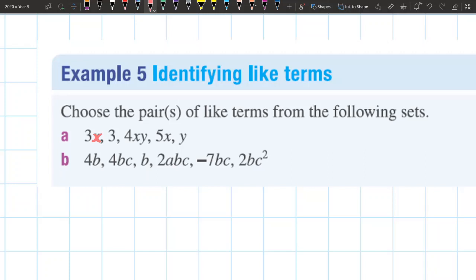Now I'm going to go through my list and find any other term that has an x in it. 3 doesn't have an x, this is not going to be a like term. I've got 4xy here. There's an x here. Is this a like term to 3x? No. If you notice here, there's a y at the end here, so they don't have the same pronumeral factors.